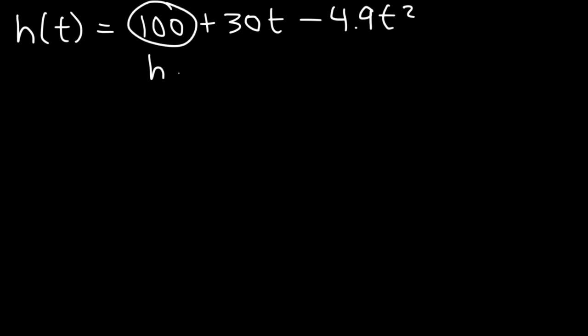100 represents the initial height. So chances are the ball is kicked off from a cliff. 30 represents the initial velocity. And 4.9 is really the combination of one half and the acceleration due to gravity which is 9.8 meters per second. So just some background info on the equation if you wanted to know. But we really don't need to know that.